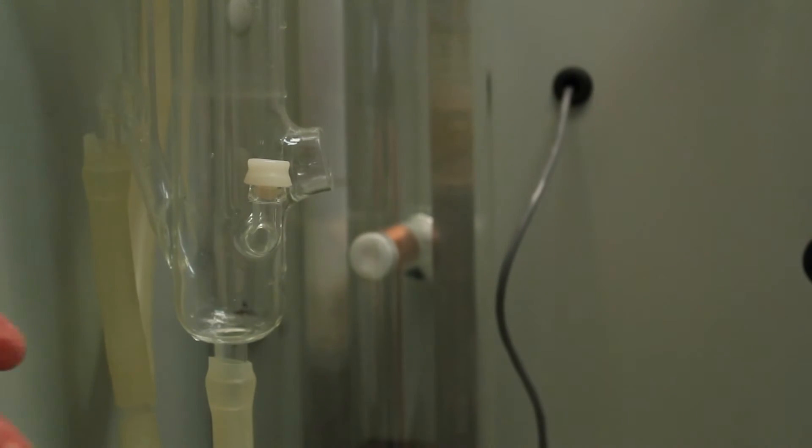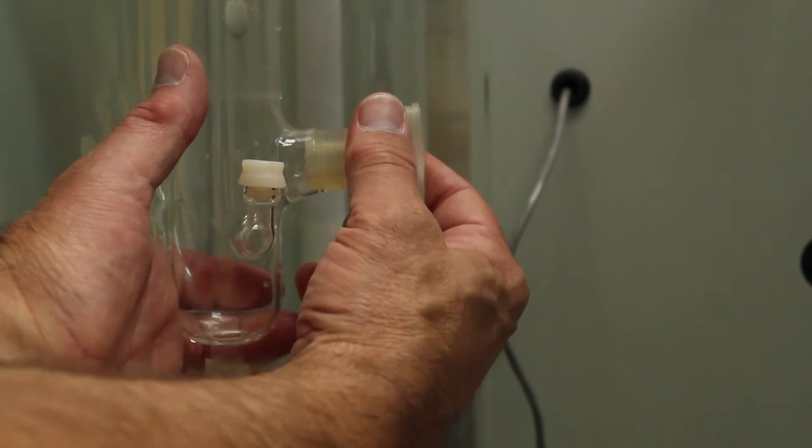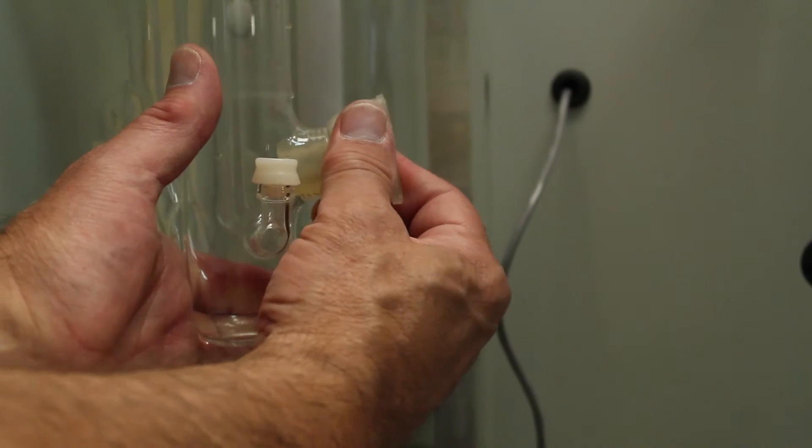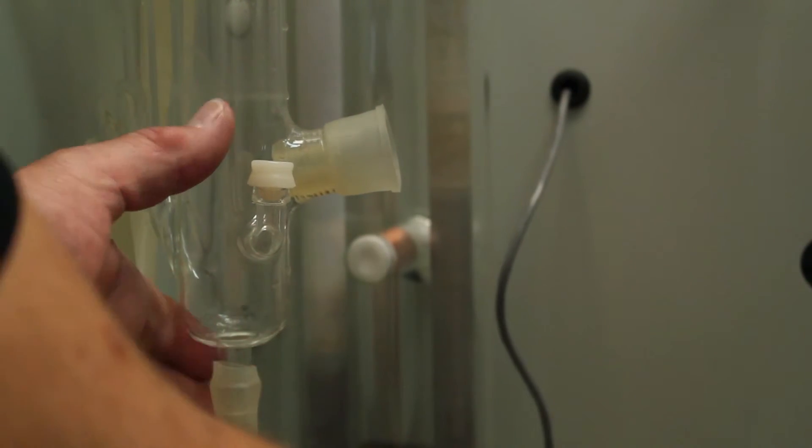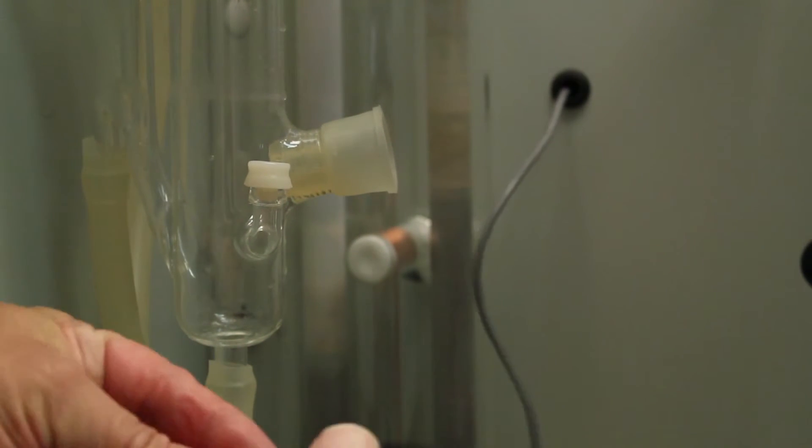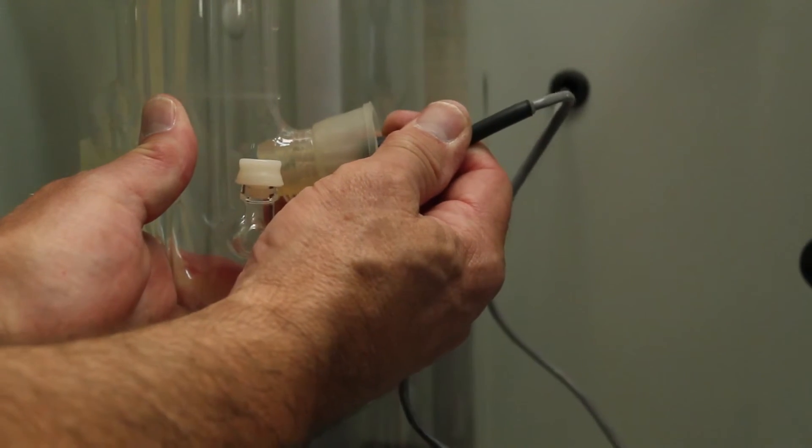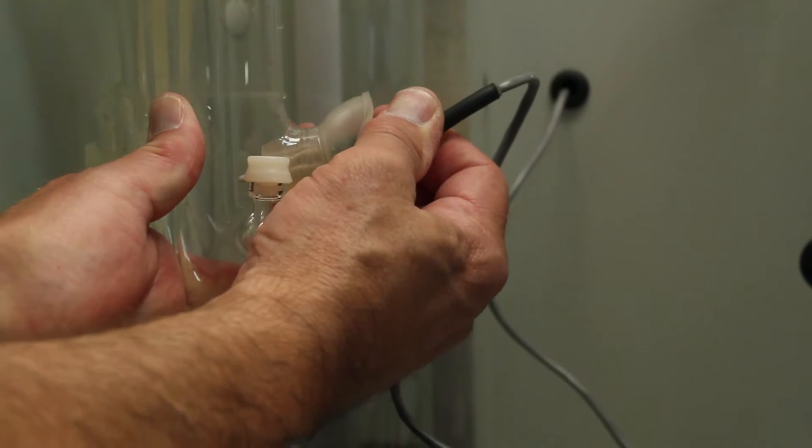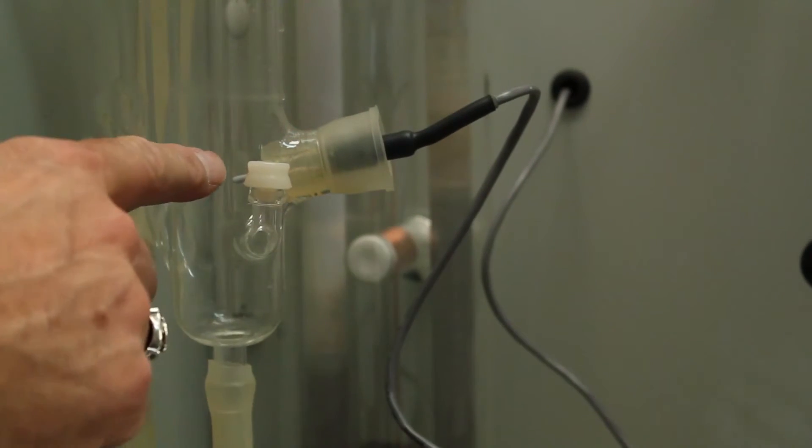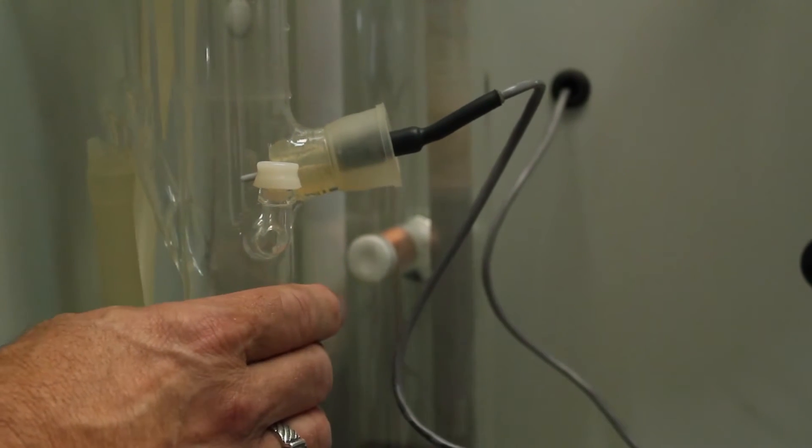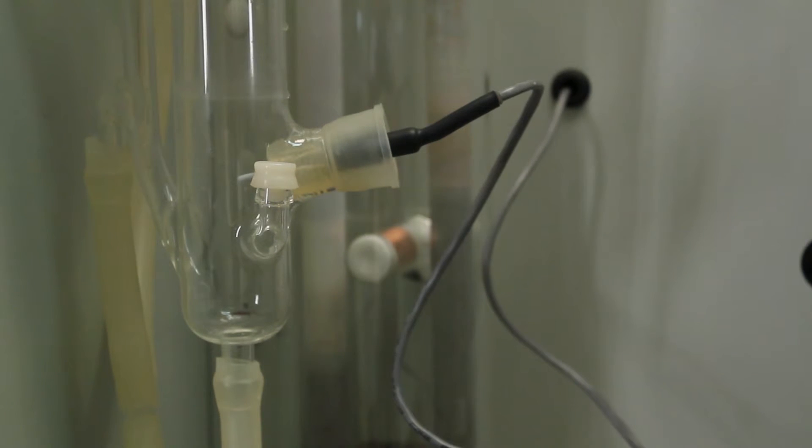The last piece to install on the constant level device is the thermistor. This is the thermistor plug, put that in empty. Take your thermistor, you can put a little bit of water on the thermistor, make that easier to slide inside. You slide that in so that it protrudes inside and it can sense the water level. Your constant level device is now installed.